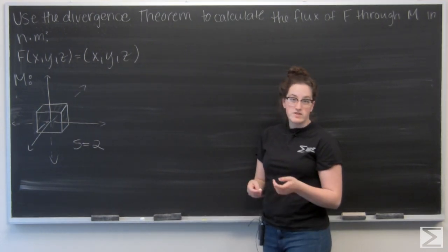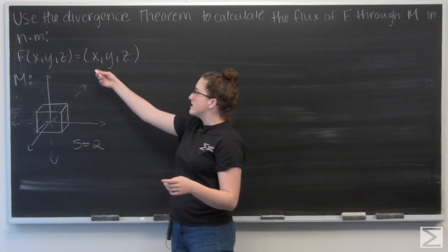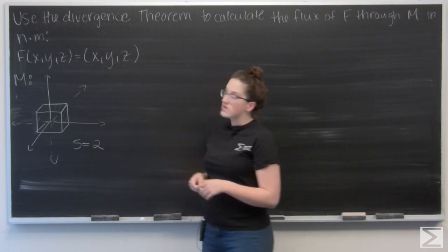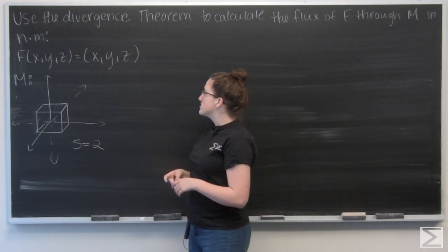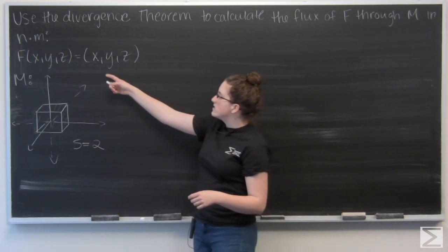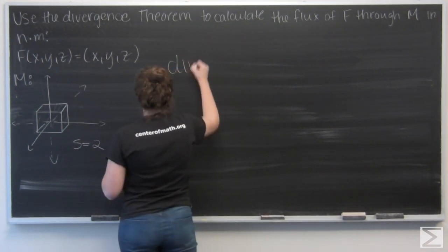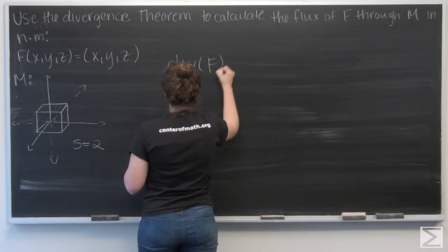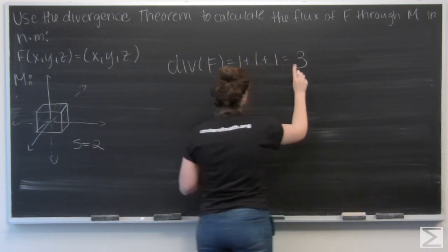Let's find the divergence of F. That is the partial derivative with respect to x of the i component, plus the partial derivative with respect to y of the j component, plus the partial derivative with respect to z of the k component. So here, I've just got 1 plus 1 plus 1, which gives me 3.